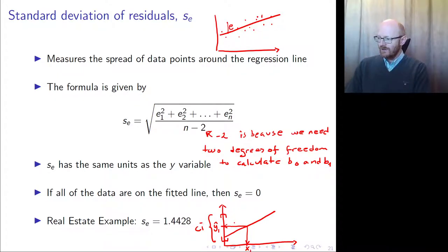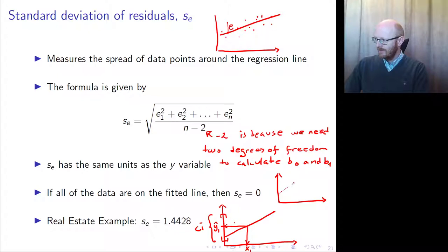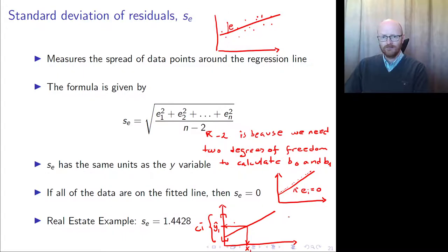If all the data are on the fitted line, then the standard error of the regression — the errors — would be zero, because if you have all the data on the line and you fit the line on top of the data, then all errors equal zero. So your line fits the data perfectly.